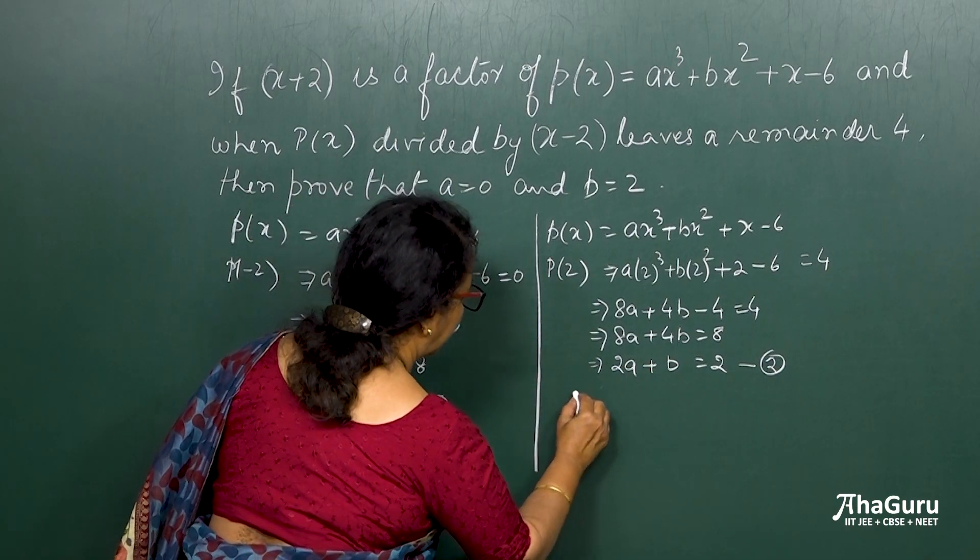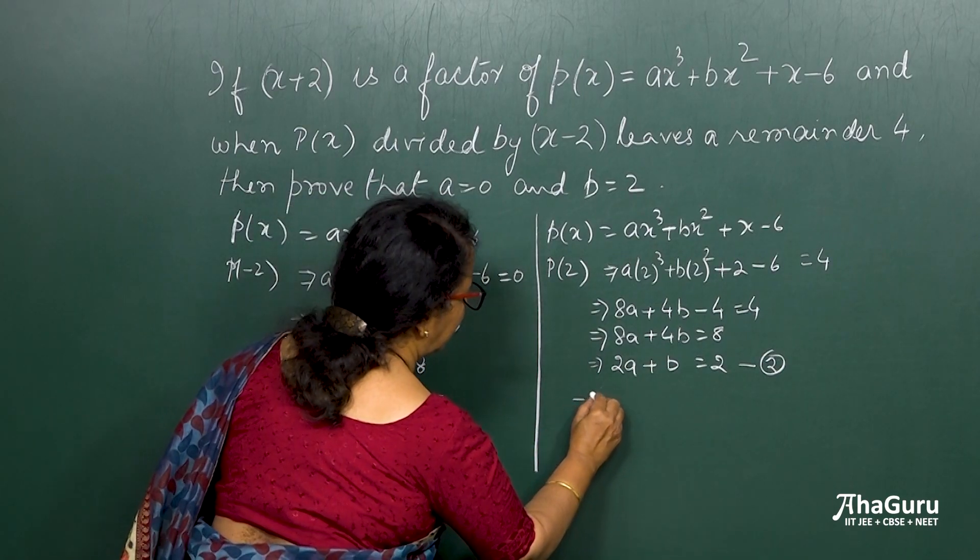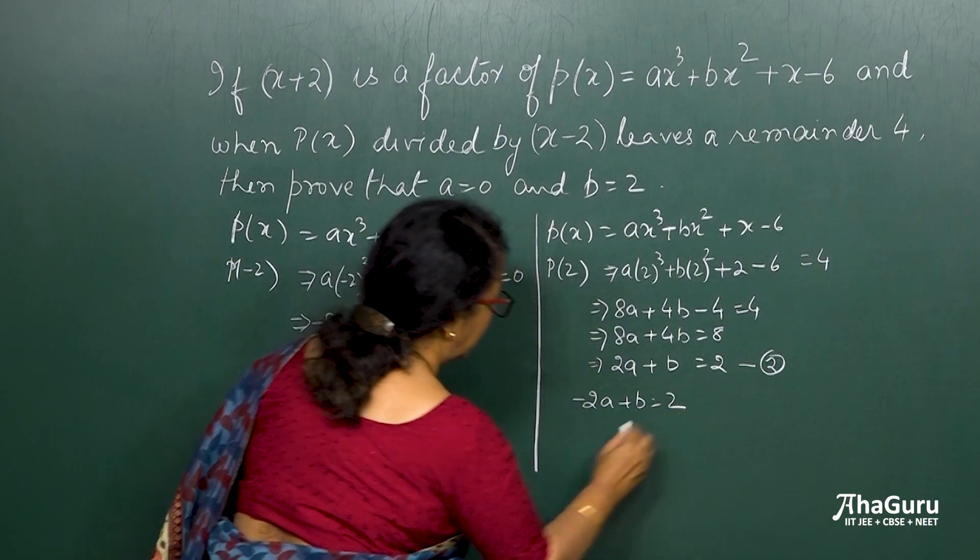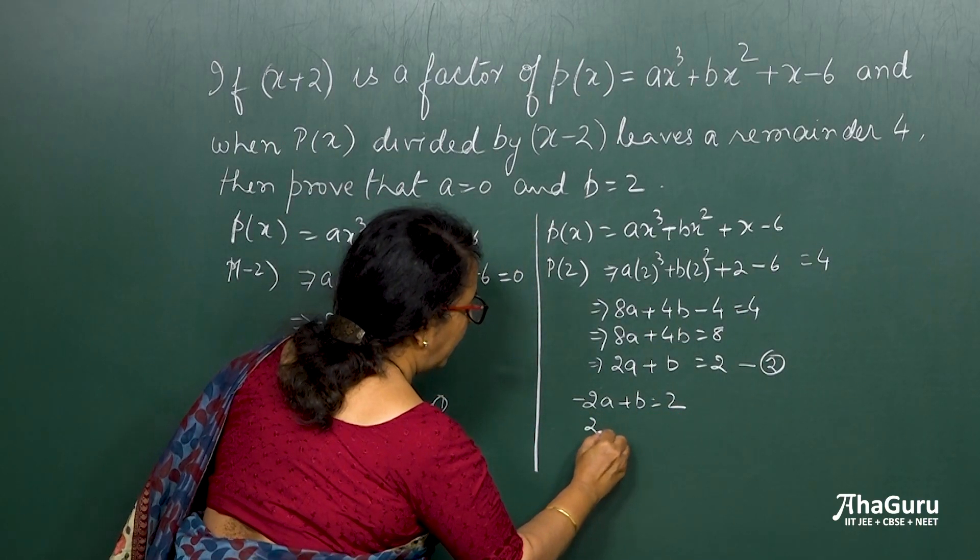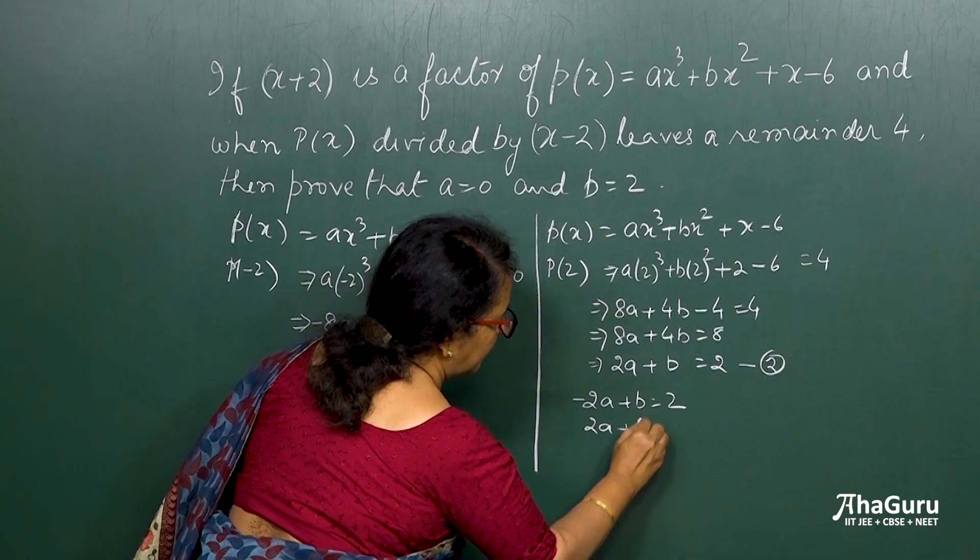So let me write them again. So this first equation I may write here as 2a plus b is equal to 2. The other equation is 2a plus b is equal to 2.